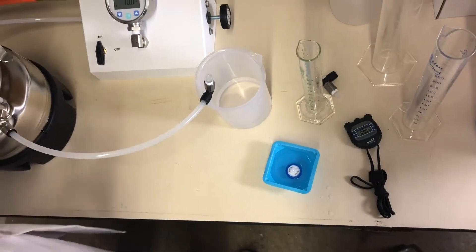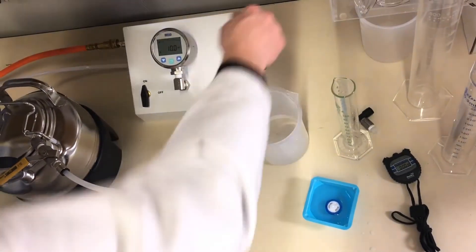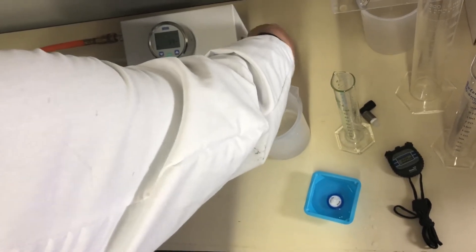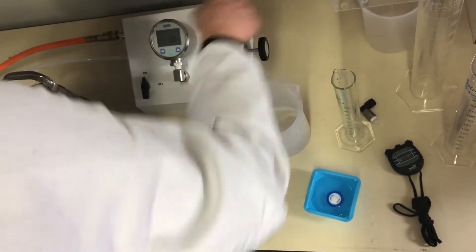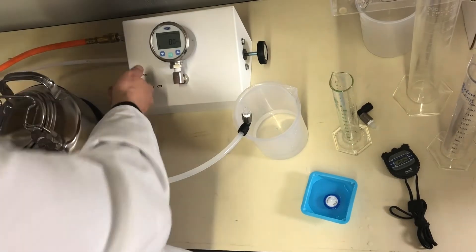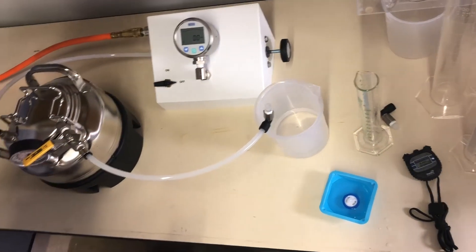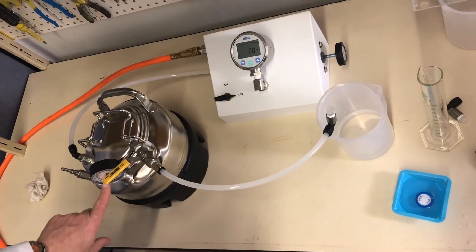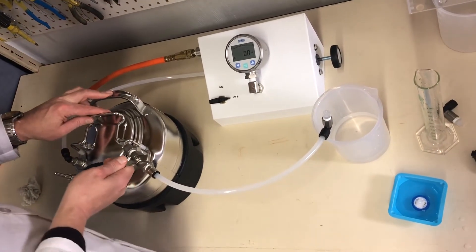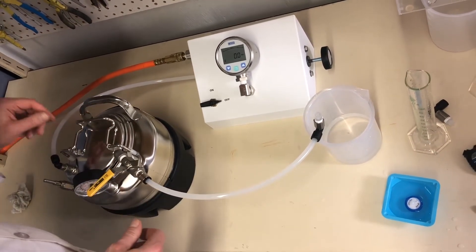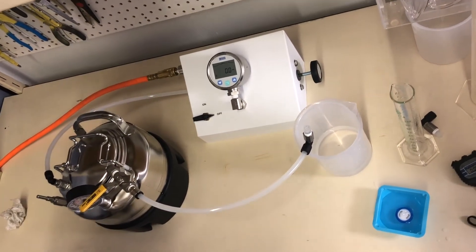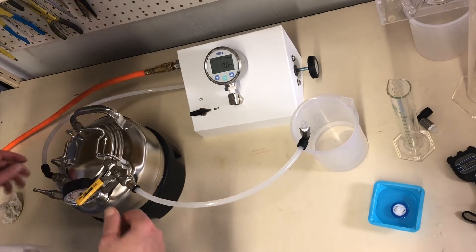And then when we're finished flow testing, we adjust the regulator all the way out until the gauge reads zero. Turn the tester off. Open the vent on the pressure pot just to make sure that it is indeed reading zero. That is safe. We're finished.